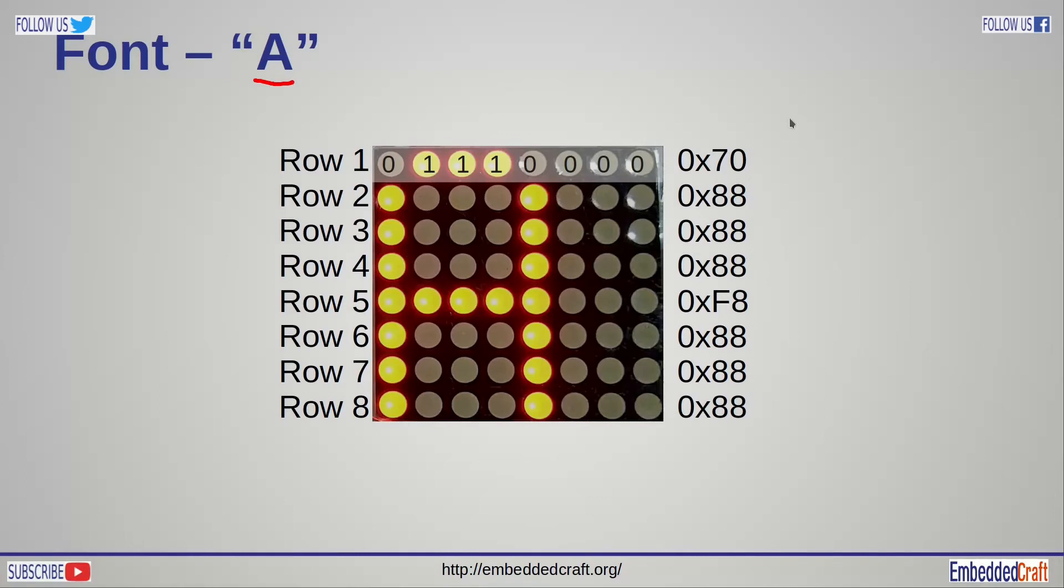Let us plan display of character A. We will glow LED in such a way that it resembles character A. Because this LED matrix is a common cathode type, writing 1 will glow LED. So in this way you can see value for first row should be 0x70, and value for second row will be 0x88. And value for third and fourth row will be 0x88. Fifth row will be 0xF8. Now we have values for each row to display character A.